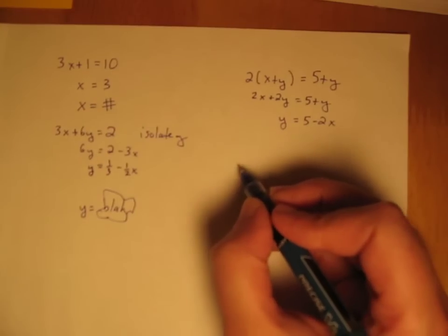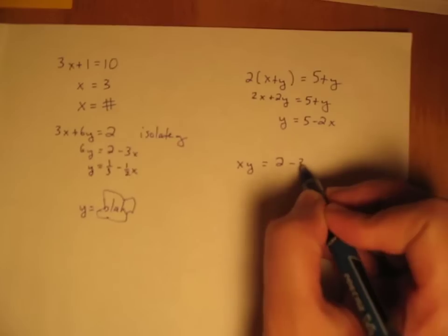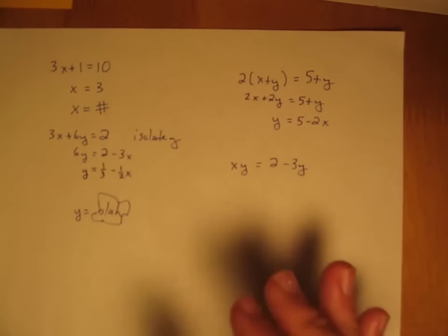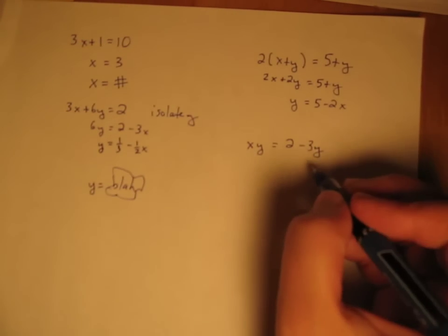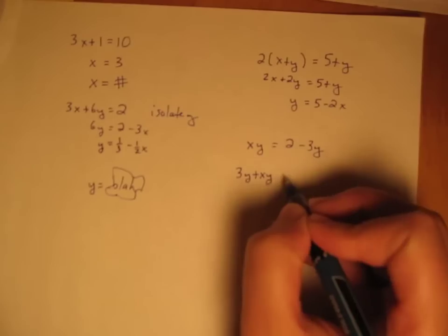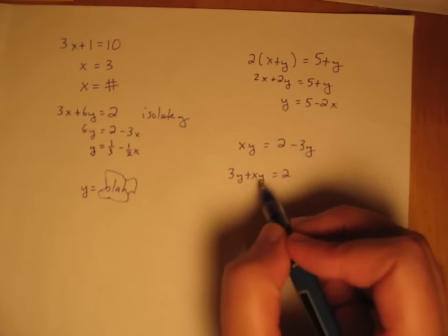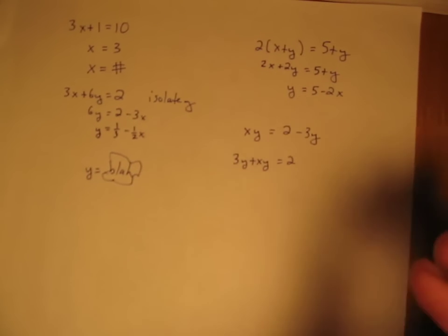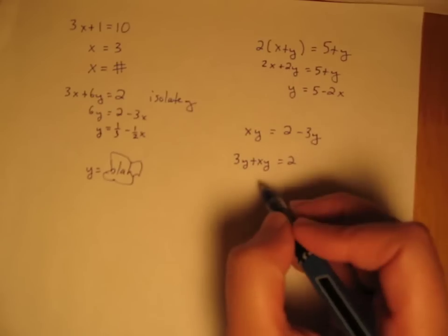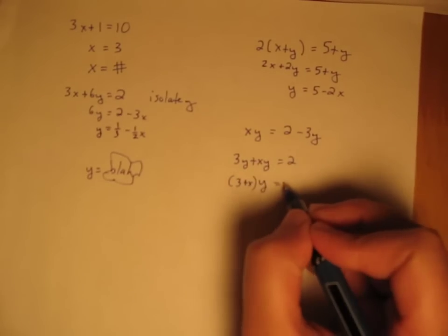Next up we've got xy equals 2 minus 3y. Now this time once we bring the y over here so they're all on one side, we won't get quite as lucky. But adding 3y to both sides, we're going to get 3y plus xy equals 2. Now here's the trick. We've got y said two times here. We need to get it said once. So what we'll do is, since this is 3y's and this is xy's, how many y's do we have altogether? We've got 3 plus xy's equals 2. We're going to factor out the y.